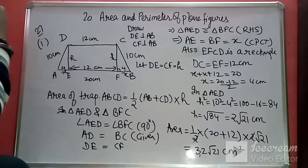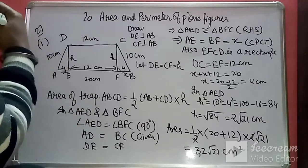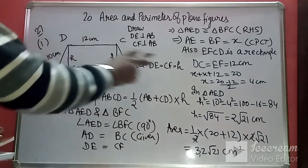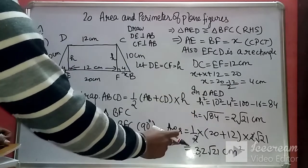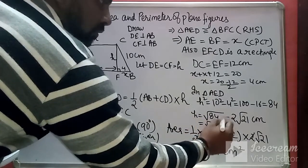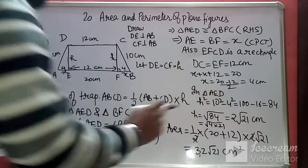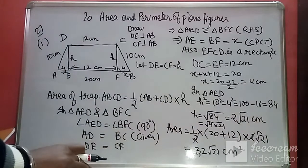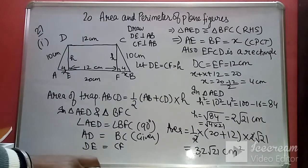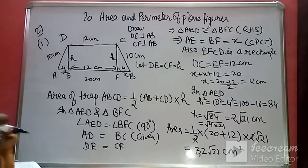To find the area of a trapezium you need two parallel sides and a height. Since we proved the two triangles congruent, we obtained the height using the Pythagoras theorem and then applied the area formula. Note that root 84 equals root of 4 times 21, so the square root of 4 gives 2 and 21 stays under the root, giving 2 root 21 centimeters.